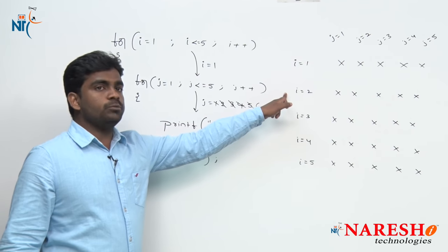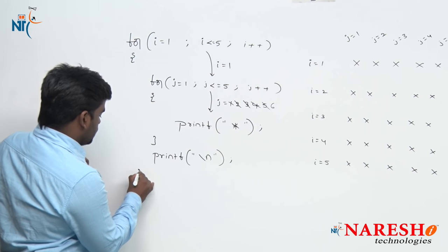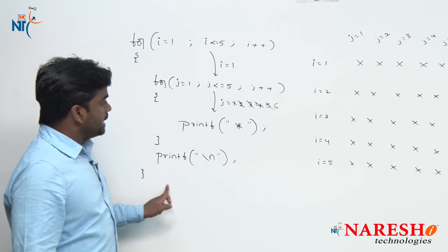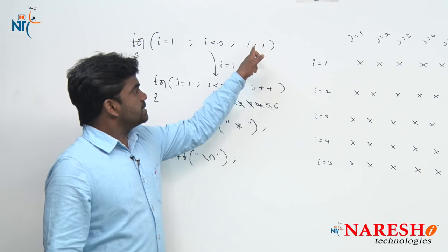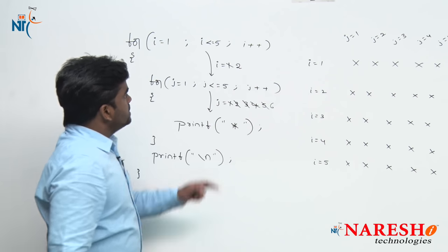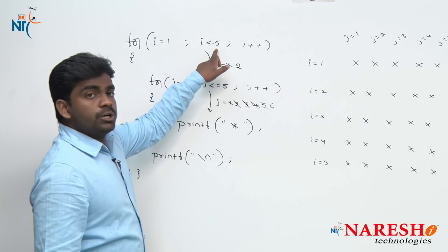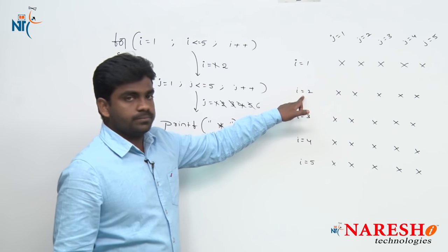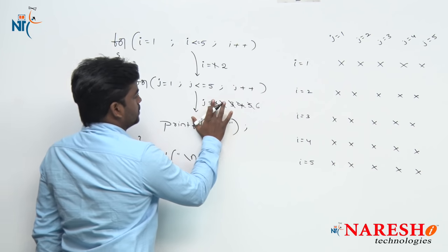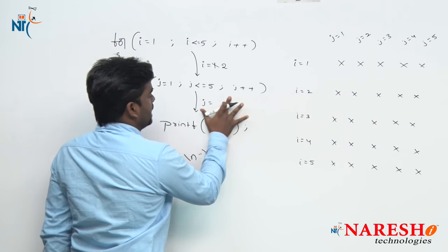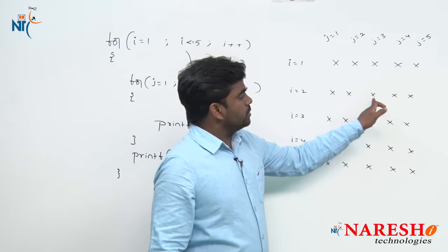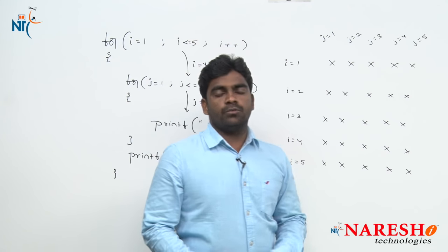How does i become 2? Whenever the control reaches the last statement of the outer loop, the modify statement increases i. Now i value becomes 2; 2 is less than or equals to 5, condition true. The control moves inside again, and j value restarts from 1. So with j values 1, 2, 3, 4, 5 — the second row prints.